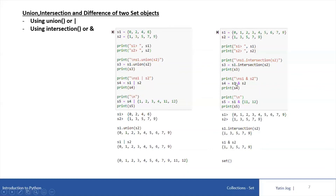The same result can be achieved using the AND operator. If I say S4 = S1 & S2, that means calculate the intersection of set S1 and S2 — find the common elements and store them into S4. If I print S4, it prints the same elements 1, 3, 5, 7, 9 on the screen.